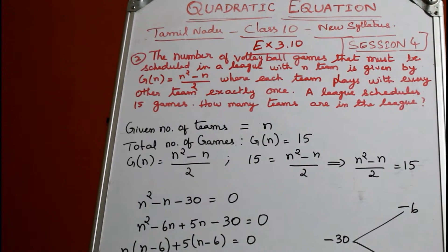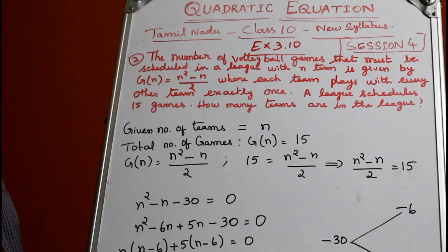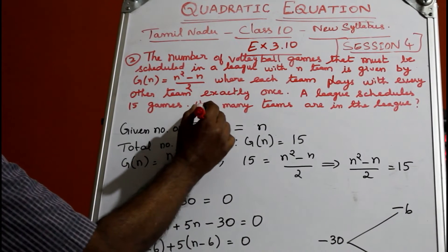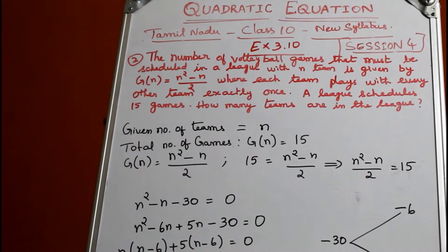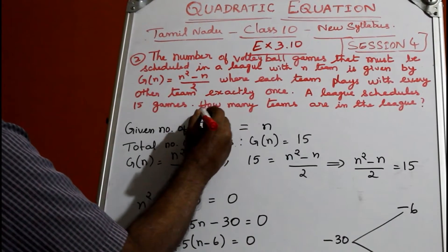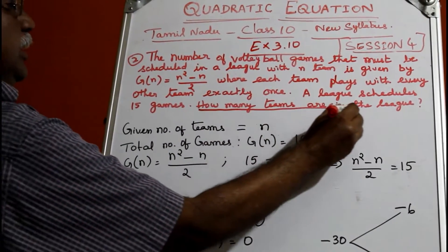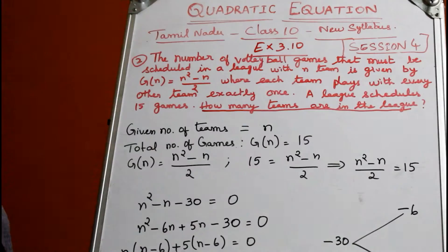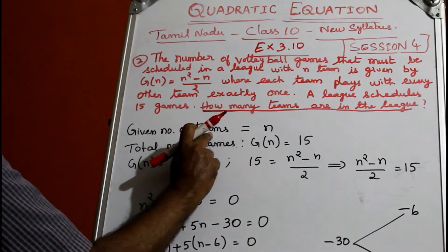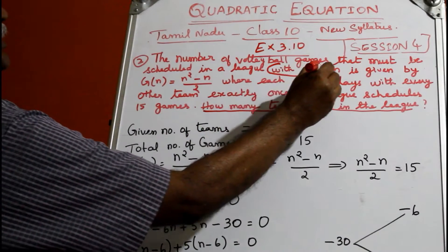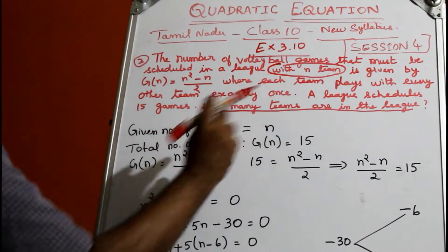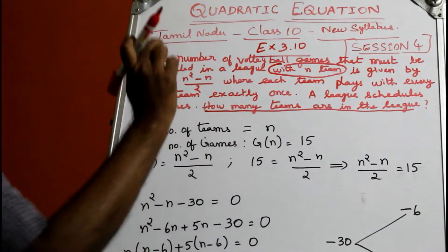Now with the second sum, this is the statement sum. The question says it speaks about volleyball games played by n teams. The question is, how many teams are there in the league? Given number of teams equals n, so the league has n teams.